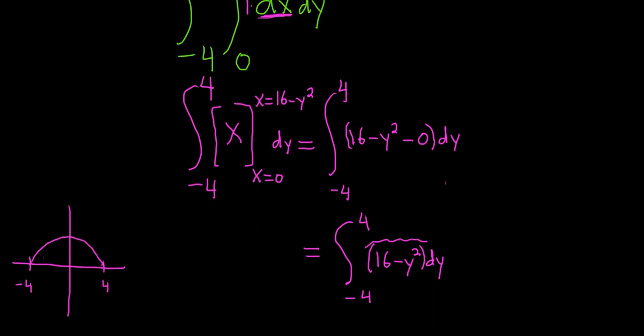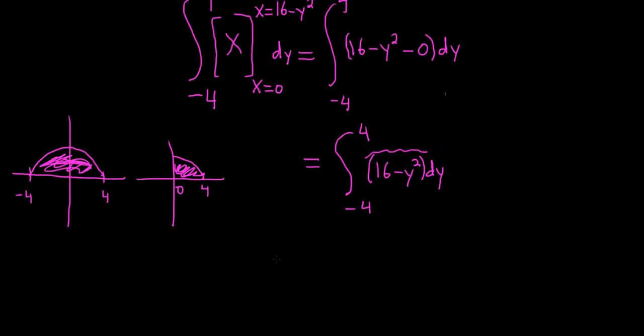What you can do is instead find the area under half the graph, so go from 0 to 4 and then multiply by 2. Let's do it. We're pros, this is calculus, we can do whatever we want as long as it's correct. So this is 2 times the integral from 0 to 4 of 16 minus y squared dy.